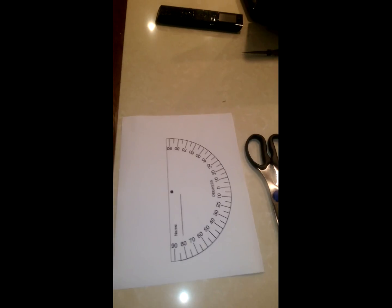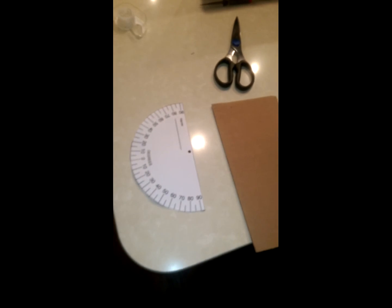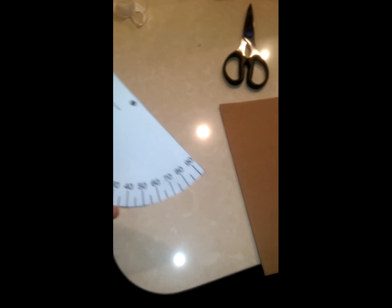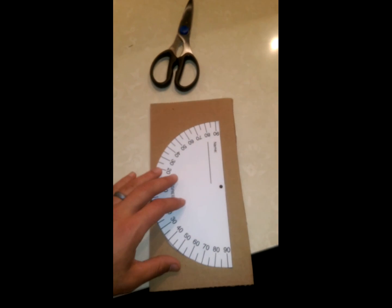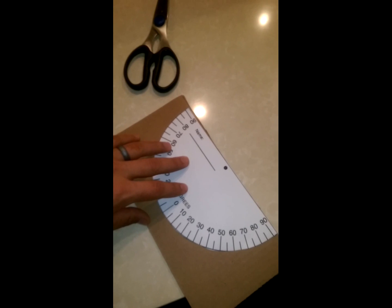The first thing we're going to do, we're going to cut this out. Once we have it cut out, I can glue it or tape it to this cardboard. I want to keep it right up on the edge to make sure that it's all lined up.